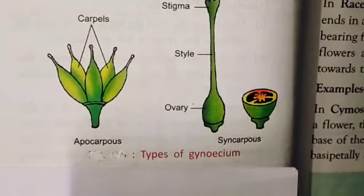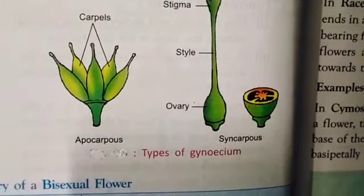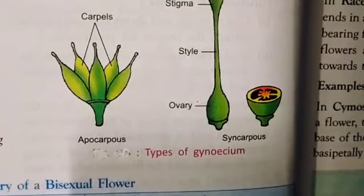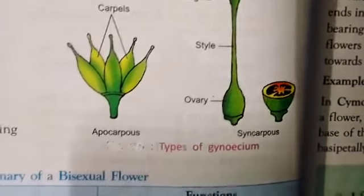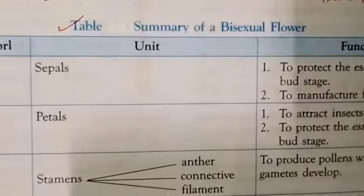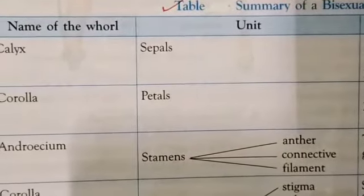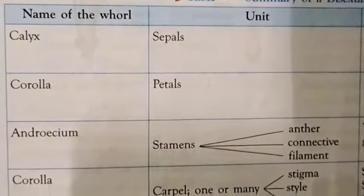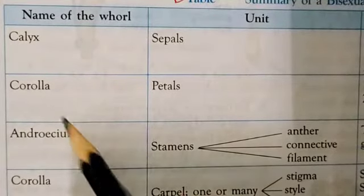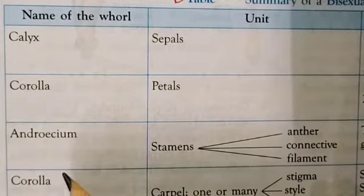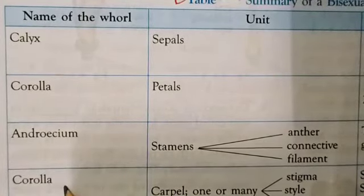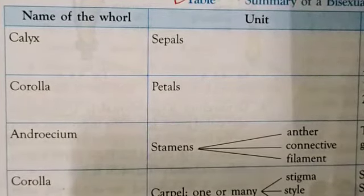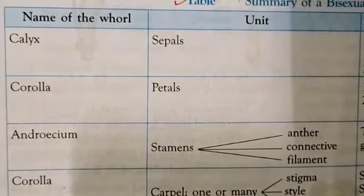Now I will give you the summary of a bisexual flower in tabular form. You know there are four whorls in the flower: calyx, corolla, androecium, and gynoecium.